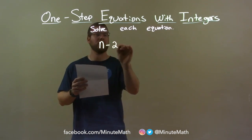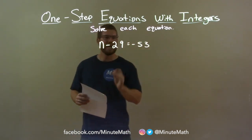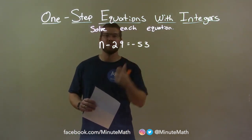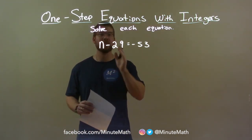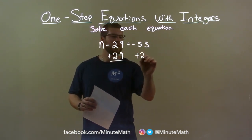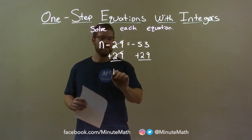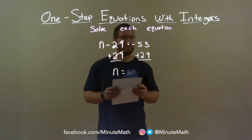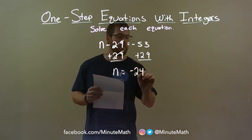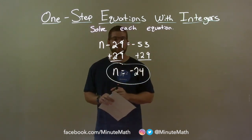n minus 29 equals negative 53. We want to get n by itself. It's being subtracted by 29, so opposite of subtraction is addition. I'm going to add 29 to both sides. The 29s cancel on the left, giving me n by itself. Now negative 53 plus 29 is negative 24. So my final answer is n equals negative 24.